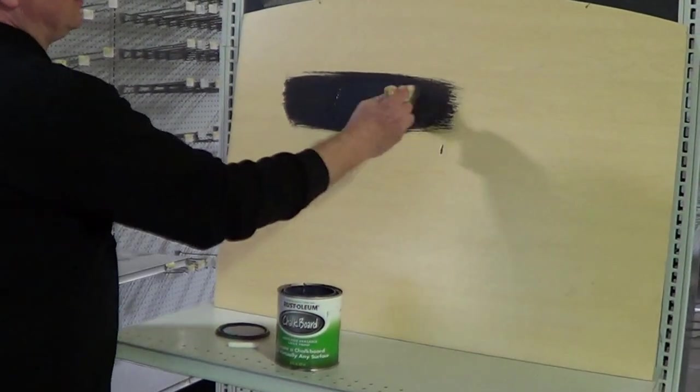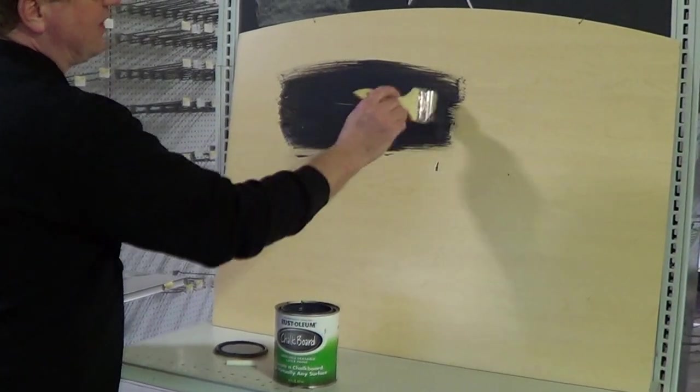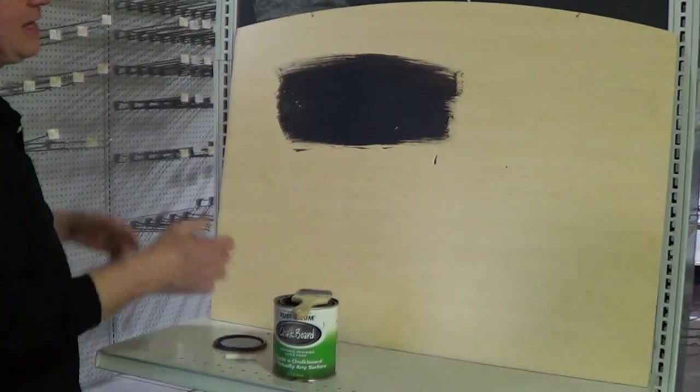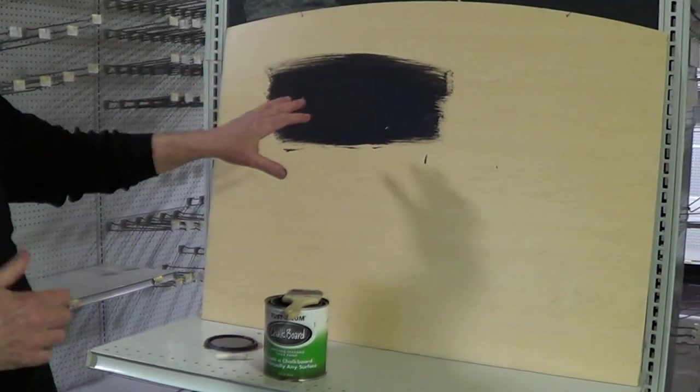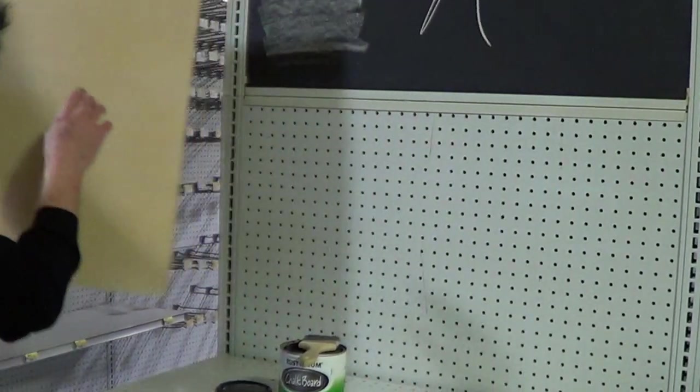You just paint it on the surface and let it dry for a couple of hours. Then you're going to come back after it dries and put a second and a third coat. Then you want to let it cure for about three days.